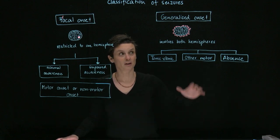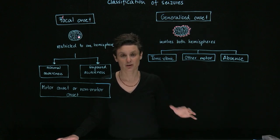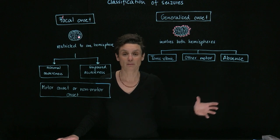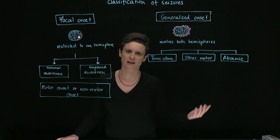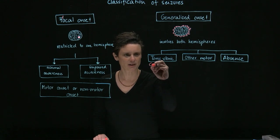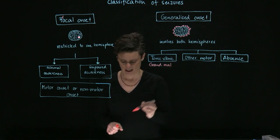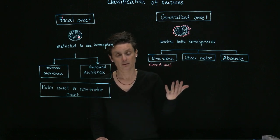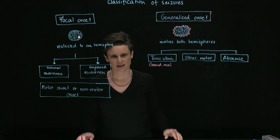So next I want to talk about generalized onset seizures, and these involve both hemispheres. So you're not going to be just seeing one part of the body affected. The most famous generalized onset seizure is a tonic-clonic seizure, and this is also sometimes referred as grand mal seizure. So grand is French for big, and malaise means in French disease, so it's big disease.